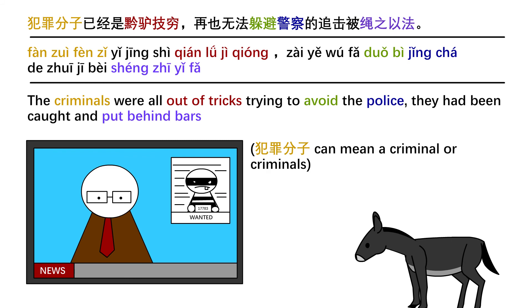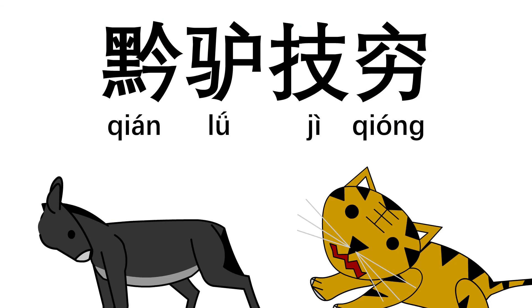犯罪分子已经是前旅既穷, 再也无法躲避警察的追击被绳之以法. And the pronunciation is, 前旅既穷, 前旅既穷.